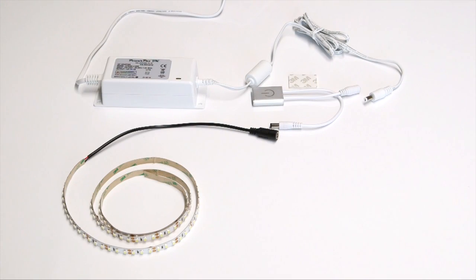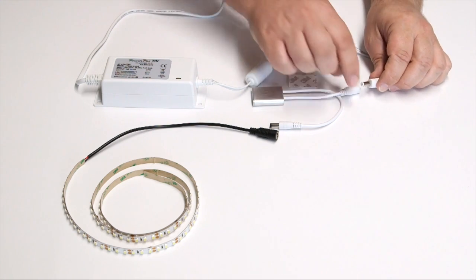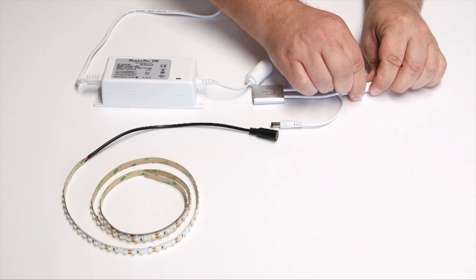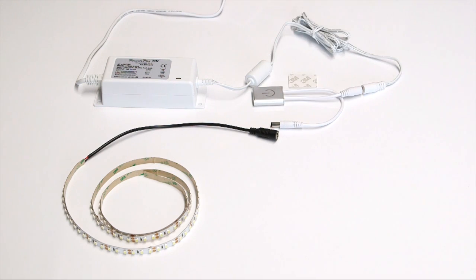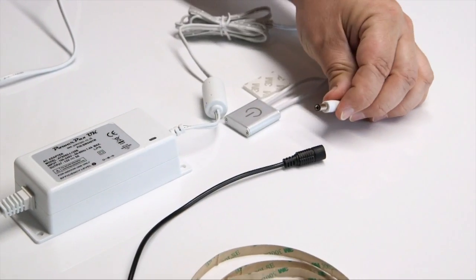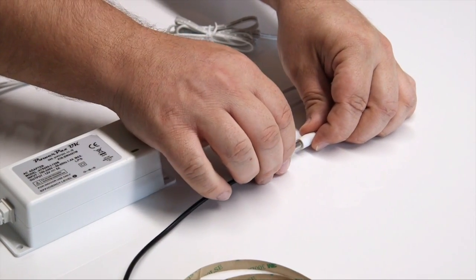Ensure the power supply is plugged in and switched off before making the following connections. First, plug the power supply into the input socket of the LED-TDS touch dimmer. Then, connect the output connector of the touch dimmer into the socket of the LED strip.